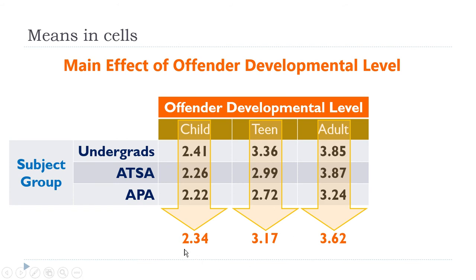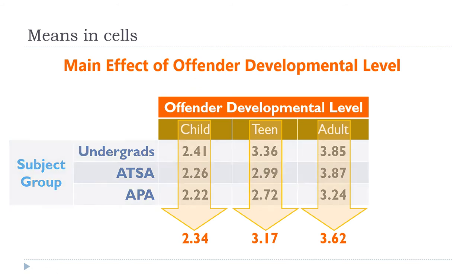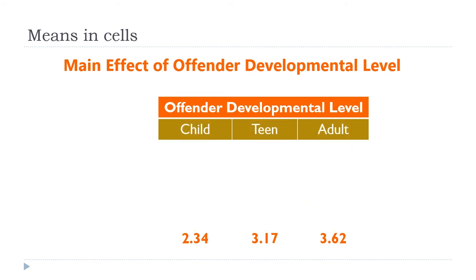So 2.34 is the average response of everybody in the study, no matter what group they were from, to a child offender. Then 3.17 is the average accountability rating to a teen offender, and 3.62 for an adult offender. This is another way of looking at the main effect of offender developmental level — it's just like a one-way ANOVA with three means.